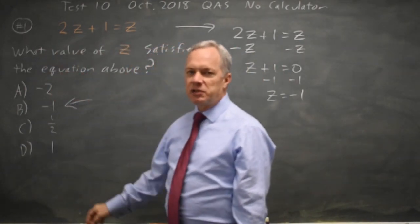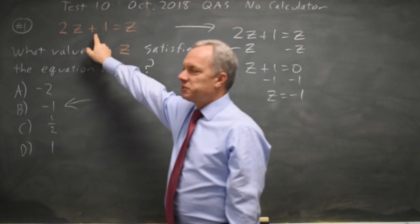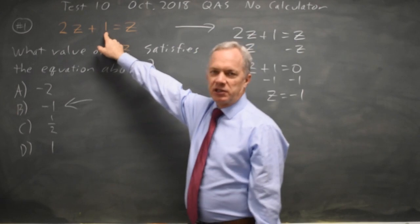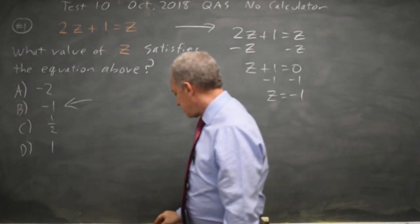Alternatively, I could substitute each answer choice into the original equation. So if I try choice a, twice negative 2 is negative 4 plus 1 is negative 3. That's not negative 2, so choice a is wrong.